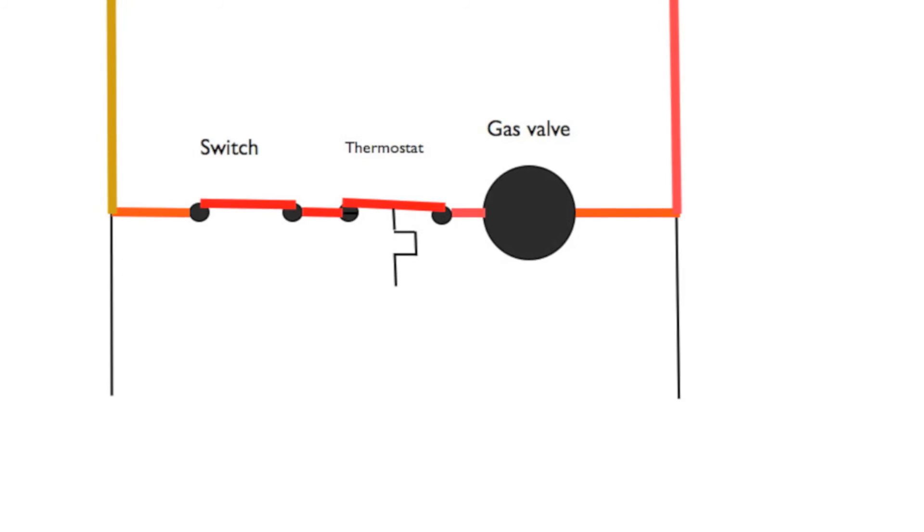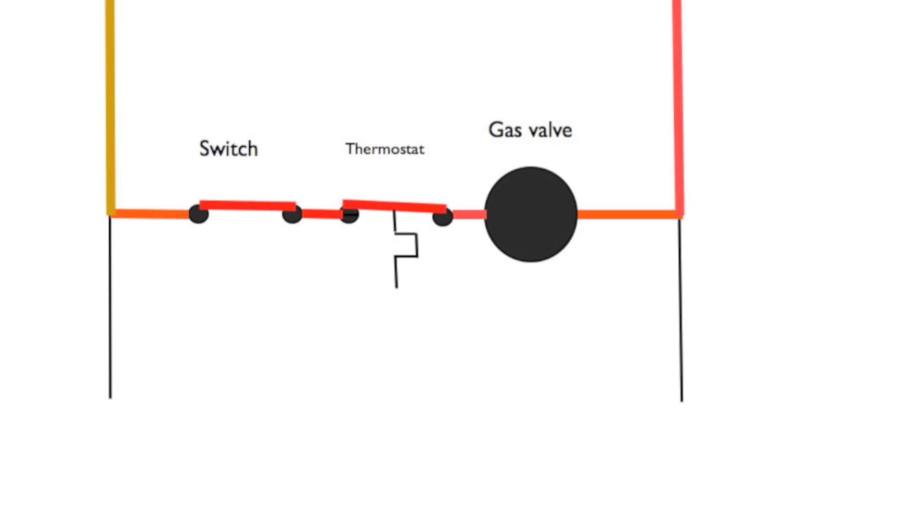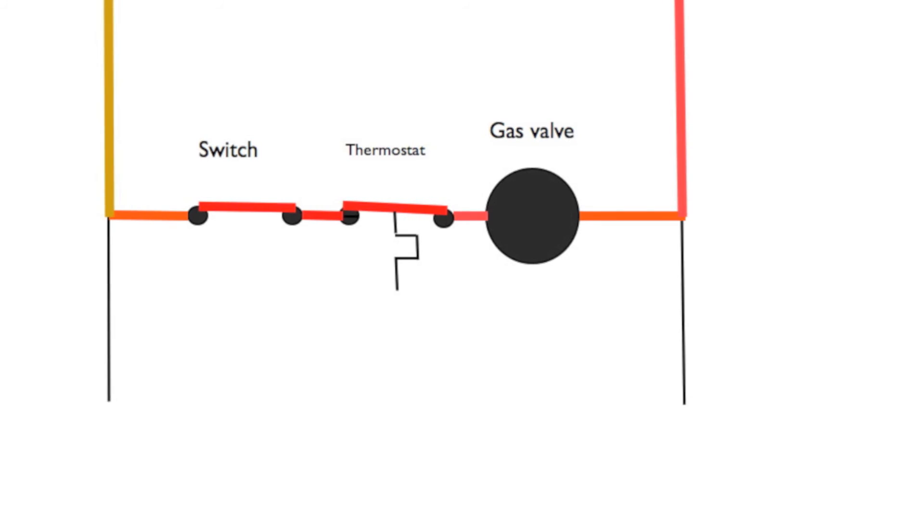All these switches have to be closed. If I was sequencing this diagram, I would say power passes through the normally open switch - it is normally open when everything is shut off - passing through the heating thermostat to energize the gas valve.